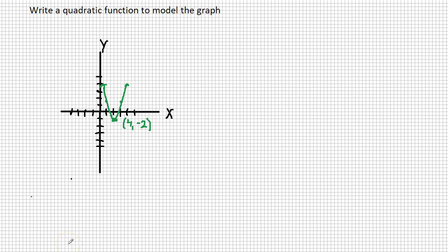In this video, we are going to write a quadratic function to model a given graph. First thing you want to do is you need to identify your vertex, which sometimes the coordinates of the points will be given, sometimes you're just going to have to look on the graph and count the squares. My vertex here is the point 4, negative 2.